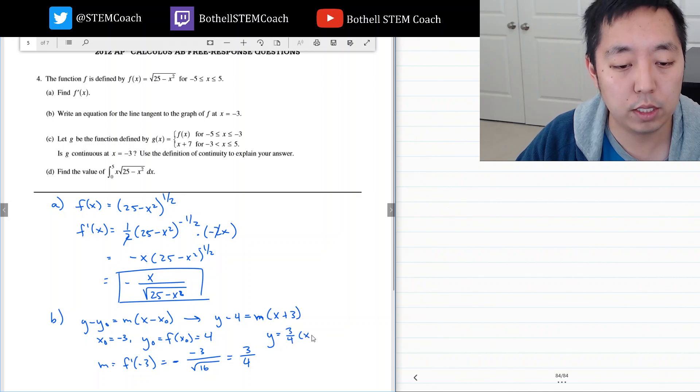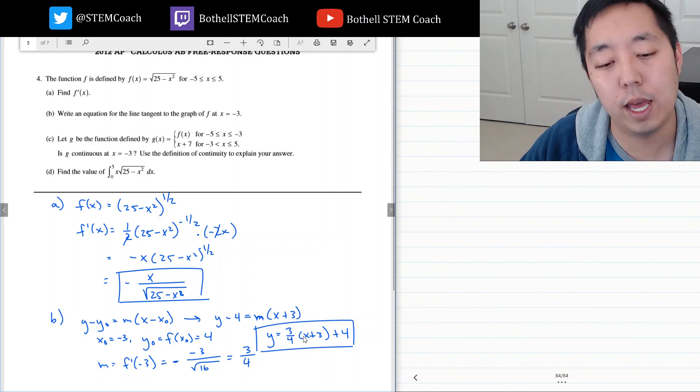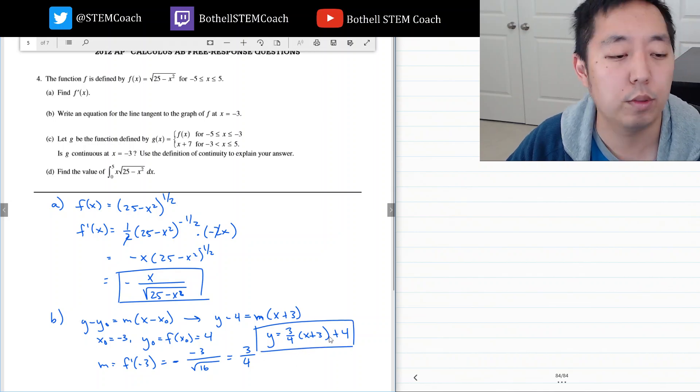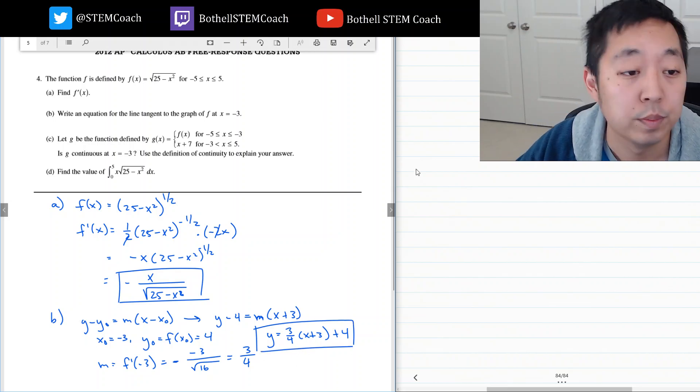And I'll just leave it like that. You could put in the mx plus b form if you want to distribute the 3 fourths. You don't have to.